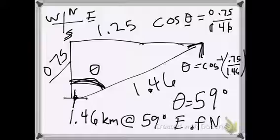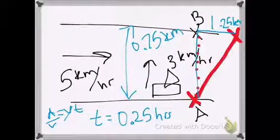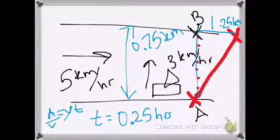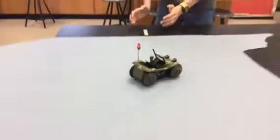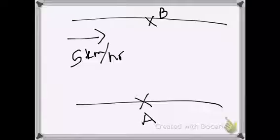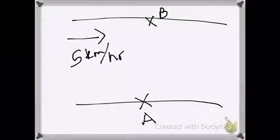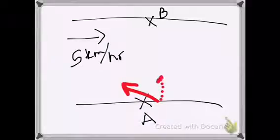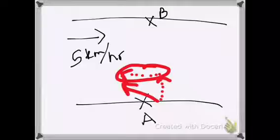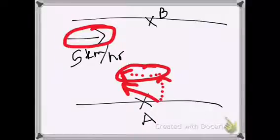Going back to the original question: can the boat get straight across from A to B? A second simulation shows that a boat can reach a point directly across the river if it angles itself upstream. By angling into the current, the boat has a component going across the river and a component going upstream.